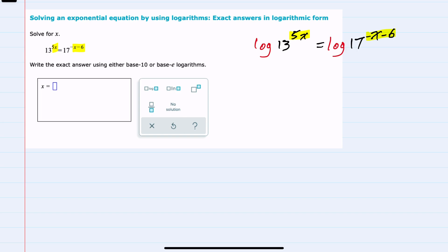So on the left-hand side, we would have 5x times the log of 13. And on the right-hand side, bringing down the negative x minus 6 as a coefficient, we should use parentheses to show that multiplication times the log of 17.